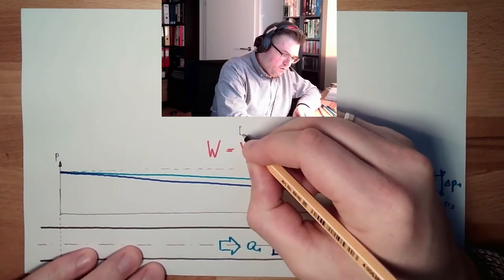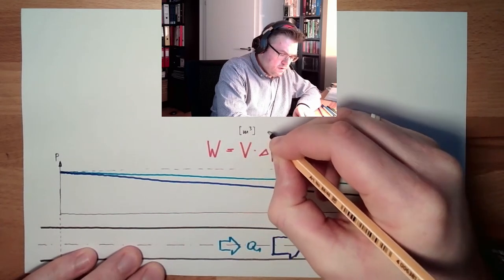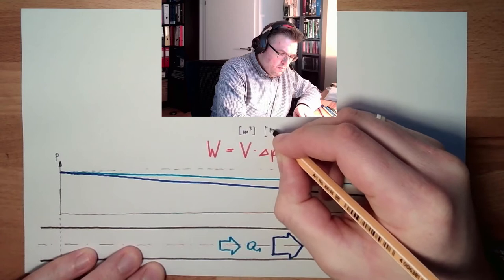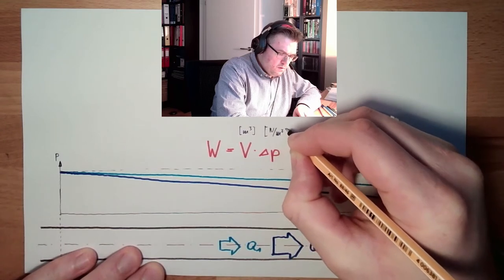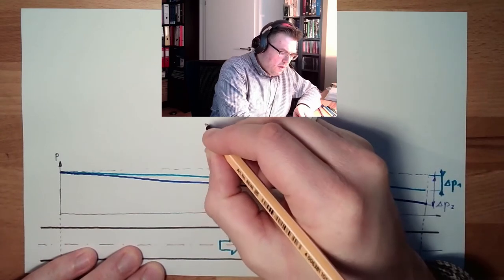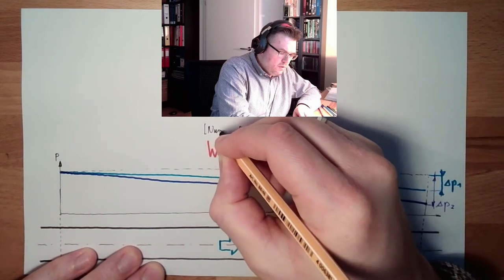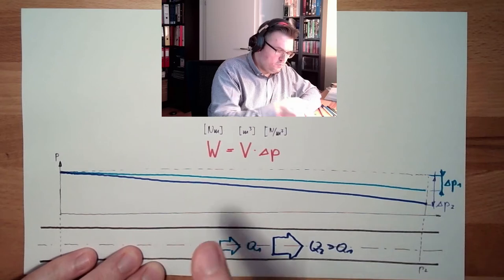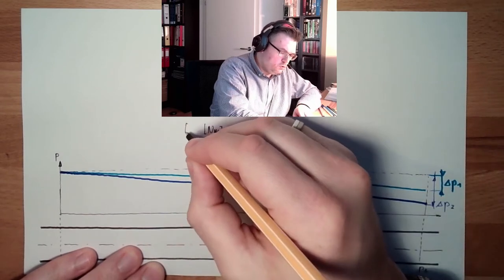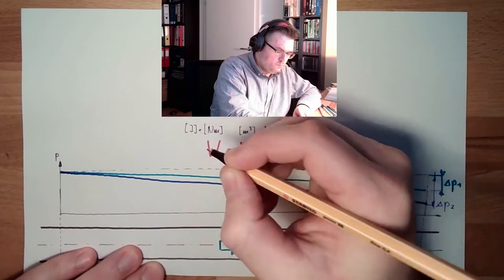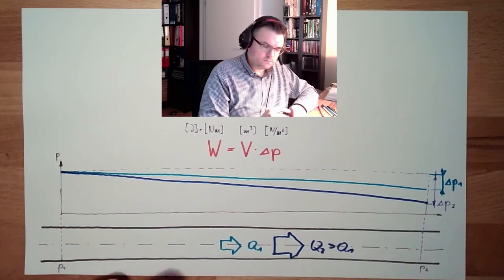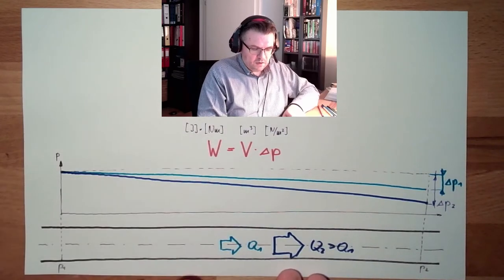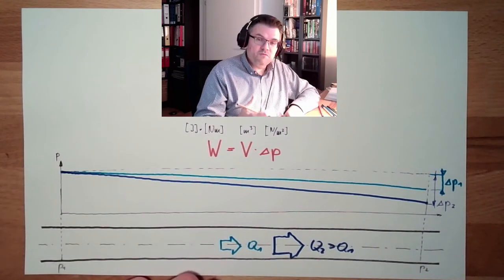Because here we have cubic meters. Here we have newton by square meter. And if I multiply them, I have here newton meter. Force multiplied by length is work. So, this is joule.